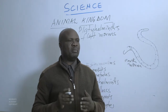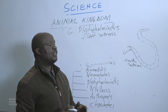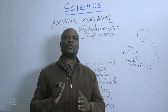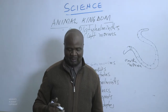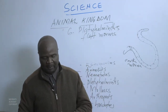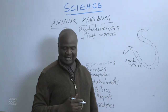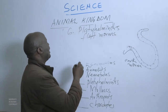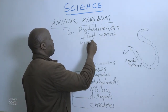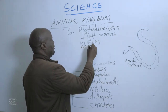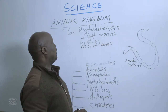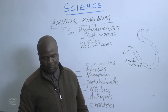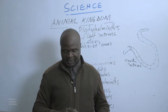Platyhelminthes have bilateral symmetry, meaning if you divide these flat worms, you can subdivide them into two equal halves — not radial symmetry. Their bodies are flat and that is why they are called flat worms. They live in water and moist places — you cannot find flat worms in an area where water is absent.